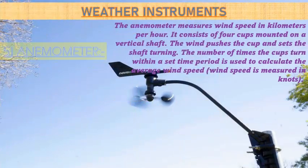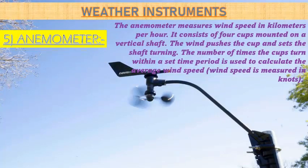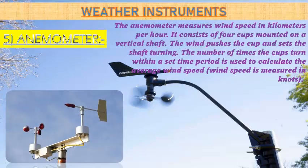Now let's know about the anemometer. The anemometer measures wind speed in kilometers per hour. It consists of four cups mounted on a vertical shaft, as you can see in the image. The wind pushes the cups and sets the shaft turning. The number of times the cups turn within a set time period is used to calculate the average wind speed. Wind speed is also measured in knots.